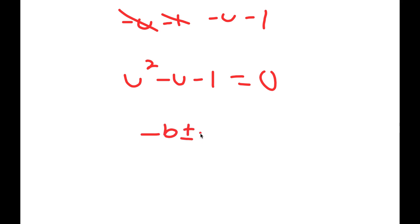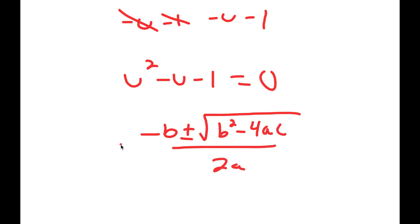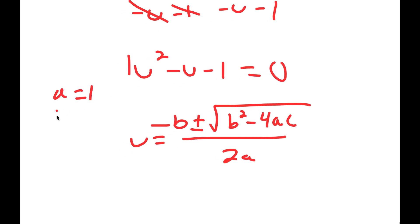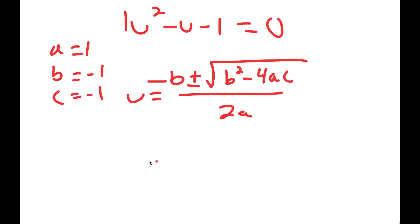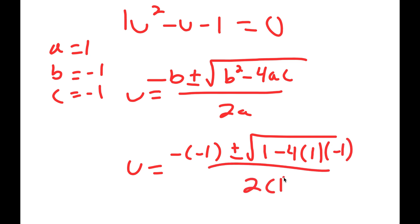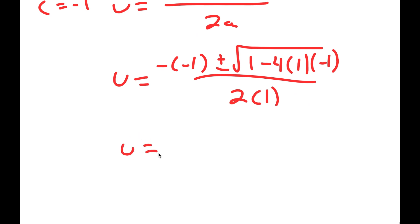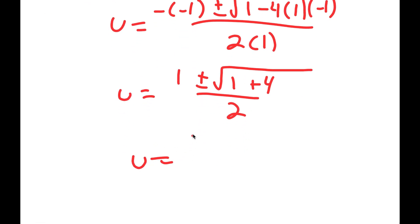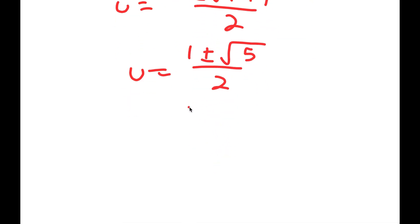To solve this equation I'm going to use the quadratic formula, which is negative b plus or minus the square root of b squared minus 4ac, all over 2a. In this case a is 1, b is negative 1, and c is negative 1. So I get u is equal to negative of negative 1, plus or minus the square root of negative 1 squared — which is positive 1 — minus 4 times 1 times negative 1, all over 2 times 1. This equals positive 1 plus or minus the square root of 5, over 2.